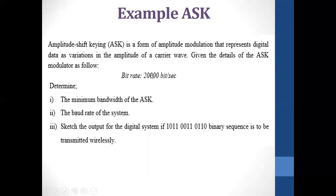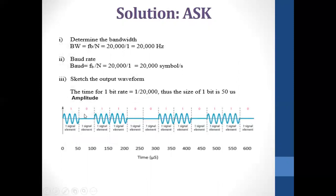Since bit rate and bandwidth for ASK are the same as we just saw, the bandwidth = bit rate = 20 kilohertz. Baud rate is also the same as the bit rate, so baud rate = 20 kilobaud per second. Note: bandwidth is in hertz, bit rate is in bits per second, and baud rate is in symbols per second.